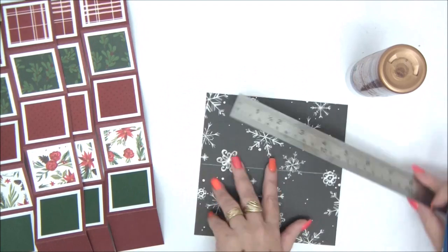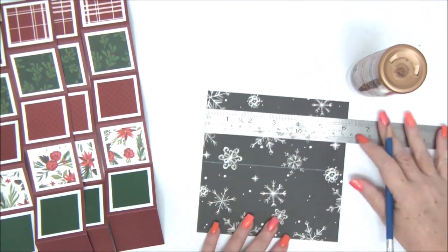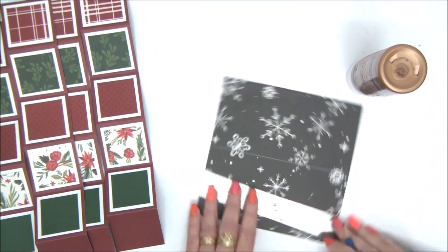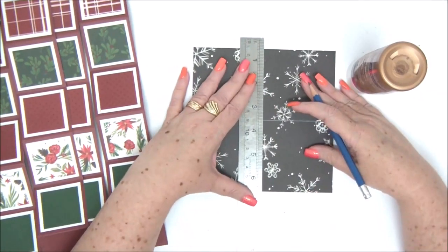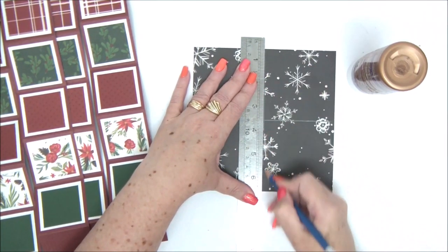We're working on the bottom. This is not going to show because this part is going to be glued to the base. And we're going to find the center in the other side as well and mark it with a pencil. Now we're going to have a cross on the paper.